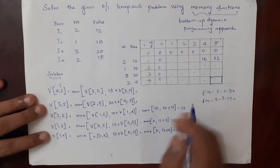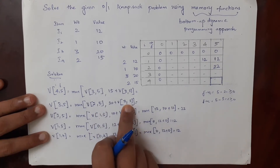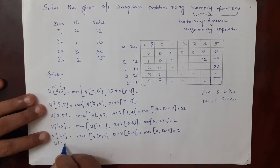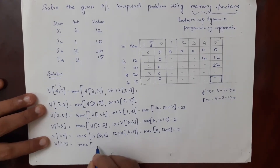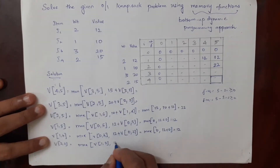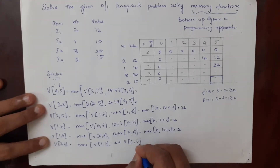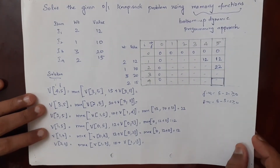We put 22 in cell 2 comma 5. Now we need v(2,2) to calculate v(3,5). For v of 2 comma 2: j minus wi is 2 minus 1 = 1, which is greater than or equal to 0, so we use the same formula: maximum of v(1,2), or value of the second item (10) plus v(1, j minus wi) = v(1, 2 minus 1) = v(1,1). Both 1 comma 2 and 1 comma 1 are unknown.